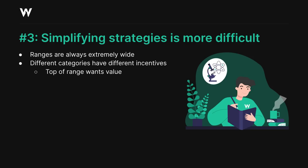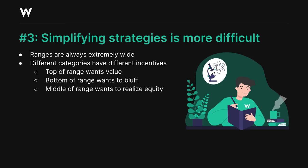The top of our range wants to get value, the bottom wants to bluff, and the middle wants to realize equity. But when each of these categories contains several hundred possible combinations of hands, balancing them all against each other is very difficult. Splitting our ranges, mixing our frequencies, and all these other things that we might often do in spots where our range doesn't contain quite so many hands are going to be more difficult in blind vs blind spots, so we have to start out with a clear perspective on what our strategic incentives are.